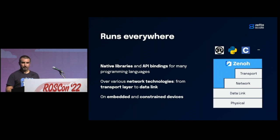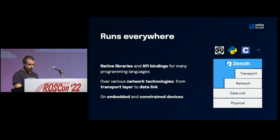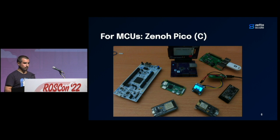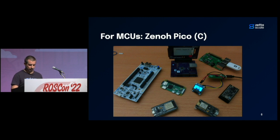Xeno is mainly developed in Rust. We provide the Rust API, and on top of this also a Python API, C API, and we are working on C++ API, C# API, and Java API soon. For more constrained devices, we also have a specific implementation of Xeno named Xeno Pico, developed in pure C. It can run on Arduino, ESP32, and a lot of other microcontroller units.